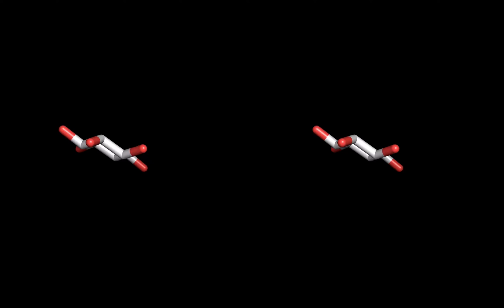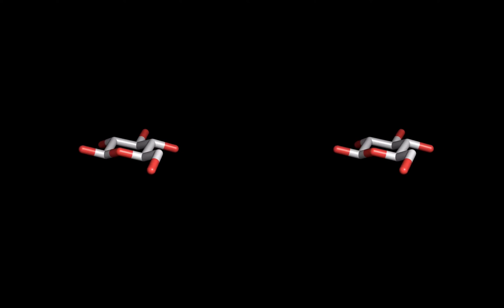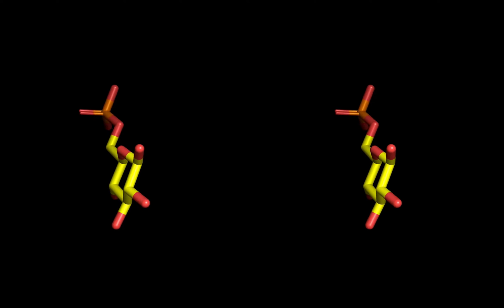We can also look at a side view of this molecule and see that it sits in a chair conformation. Those chair diagrams you might have had to draw for OCHEM class are relevant. Now let's compare this to the product of the reaction, glucose 6-phosphate, which I'll call G6P.